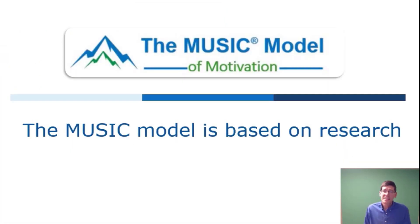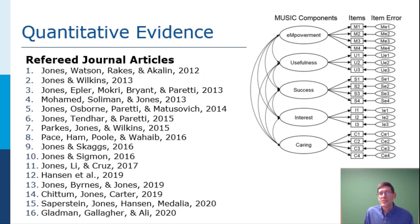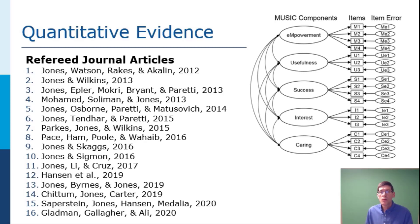Now you might say, 'That's great, Dr. Jones, this is a nice little model — so what?' Well, we have done research in a lot of different countries, and as you can see here we have 16 journal articles that show just how students' perceptions of these five things are distinct — they're separate. As a result, you can affect each one of these five things.